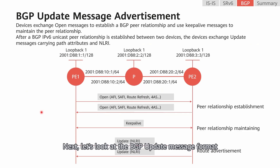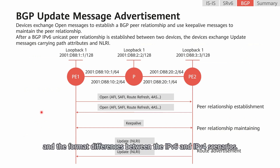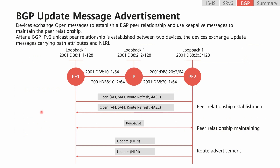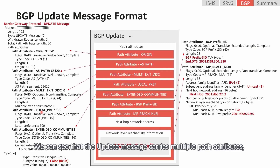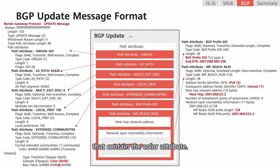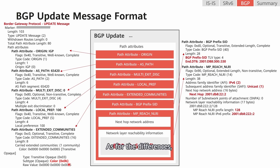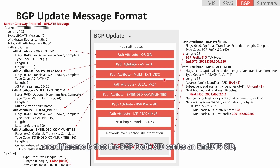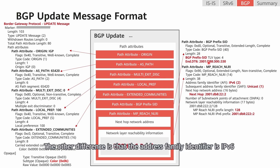Next, let's look at the BGP update message format in the IPv6 scenario and the format differences between the IPv6 and IPv4 scenarios. We can see that the update message carries multiple path attributes, including extended community attributes that contain the color attribute. These well-known attributes are the same as those in the IPv4 scenario. As for the differences, one difference is that the BGP prefix SID carries an end.dt6 SID, which is used to indicate IPv6 network access. The other difference is that the address family identifier is IPv6, and IPv6 routes are advertised in the IPv6 scenario.